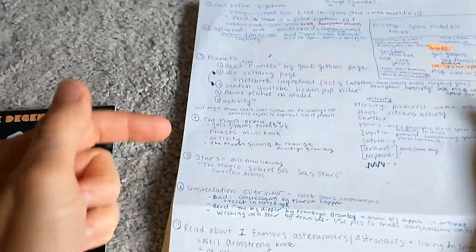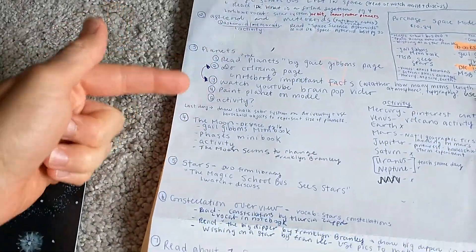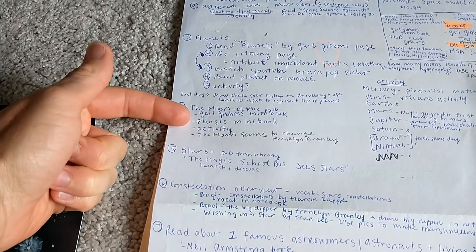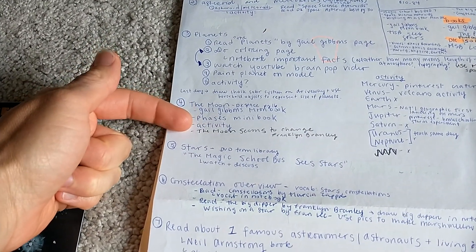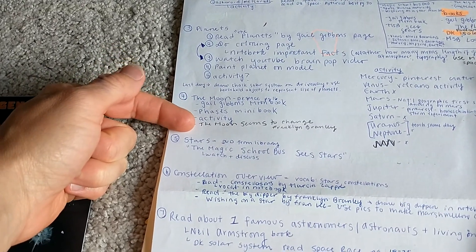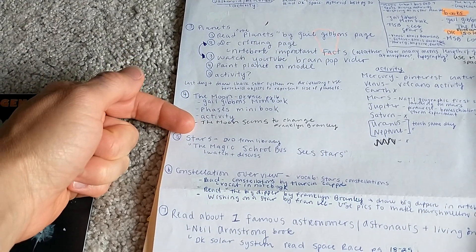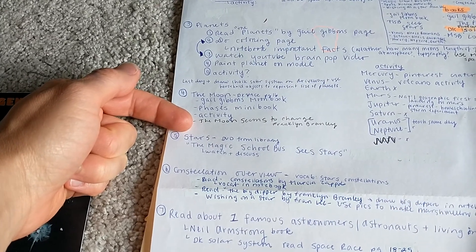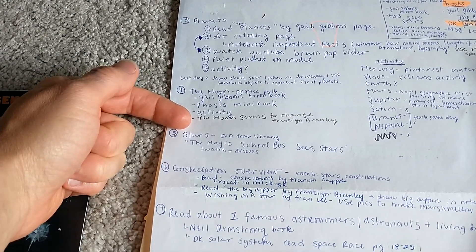So once we move past the planet unit study, then we're going to do a study on the moon. So I have the book I want to use. I printed off a mini book off of Pinterest. We'll do a moon activity. Here's another moon book. And then we'll watch the moon and study the moon every night.